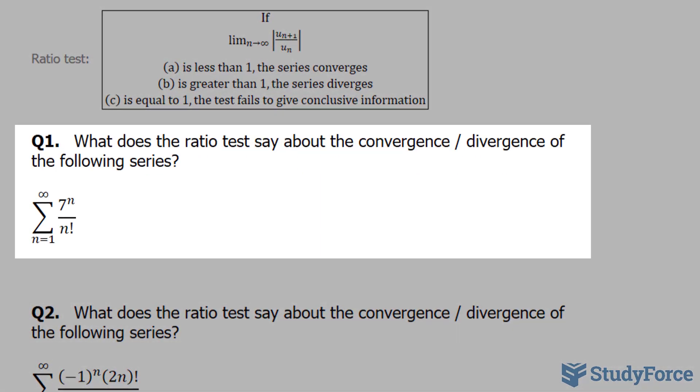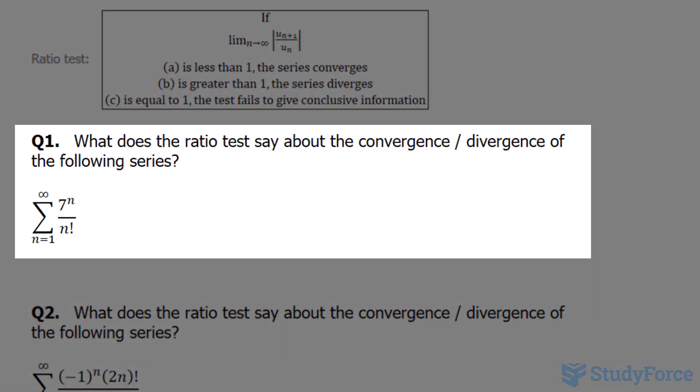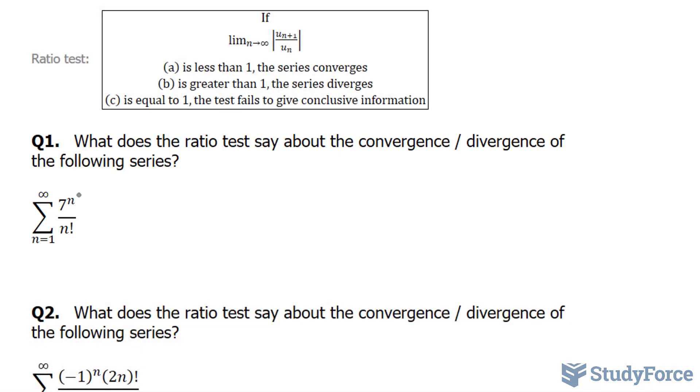The question reads, what does the ratio test say about the convergence or divergence of the following series? We have 7 to the power of n over n factorial.